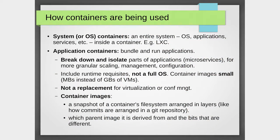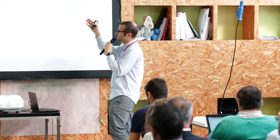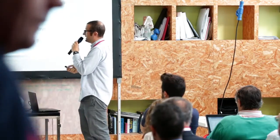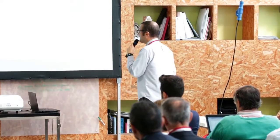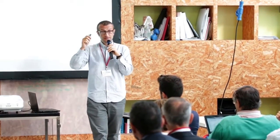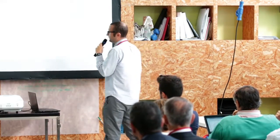There are two types of containers. System containers, or operating system containers, where an entire system including operating system applications and services can be run inside a container — that's the case of LXC, for example. Application containers are a completely different thing — they are used to bundle and run applications. With application containers you can do microservices, meaning you can break down and isolate parts of applications, which makes scaling, management, and configuration much more granular. Since it is not a full operating system, it is very light — we're talking megabytes versus gigabytes for virtual machines.